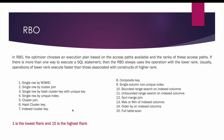Usually operations of lower rank execute faster than those associated with a higher rank. This means if a SQL statement has two ways to execute — via single row by row id or via full table scan — the optimizer will pick single row by row id as the access path because it has the lowest rank of 1, compared to full table scan whose rank is the highest at 15.